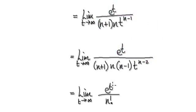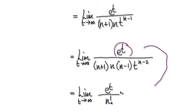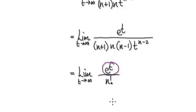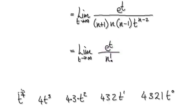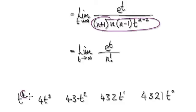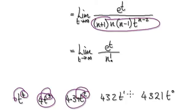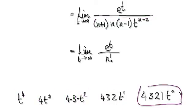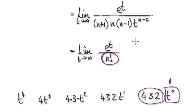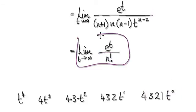If you continue this process, you're going to get n factorial at the bottom. Because if you apply L'Hôpital's rule repeatedly, eventually you get e to the power of t over n factorial. For example, when you have t to the power of 4 and follow the whole differentiation pattern, you differentiate repeatedly until t to the power of 0 equals 1. Continuing this pattern, you get n factorial — so you'll arrive at e^t over n factorial.